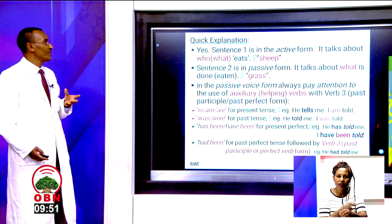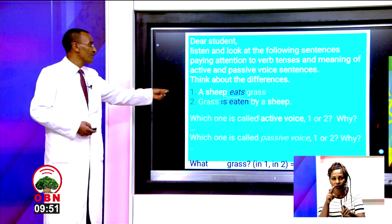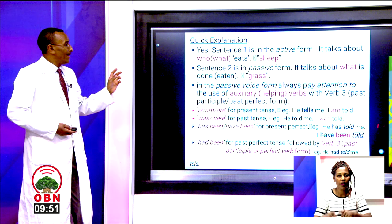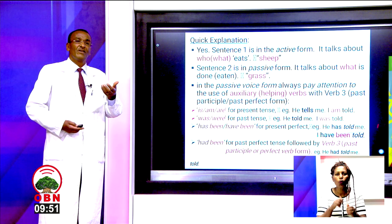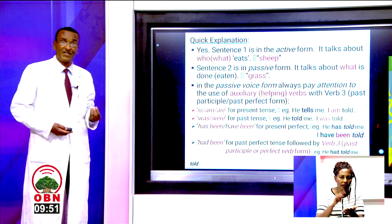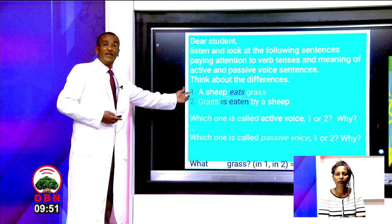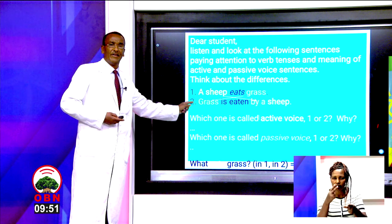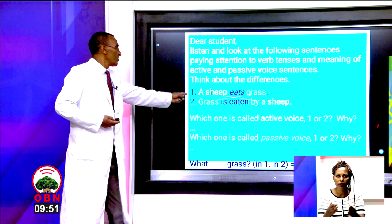Sentence two is in passive form. 'Grass is eaten' is in passive form. It talks about what is done — the thing on which the action rested — and that is grass. See the position of 'grass' in the first active sentence and in the second passive sentence.